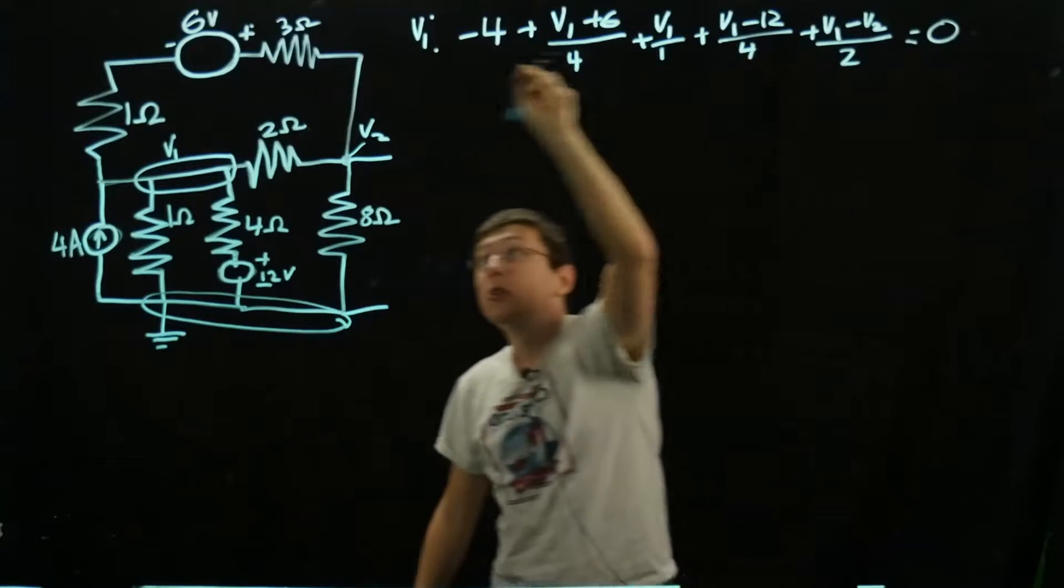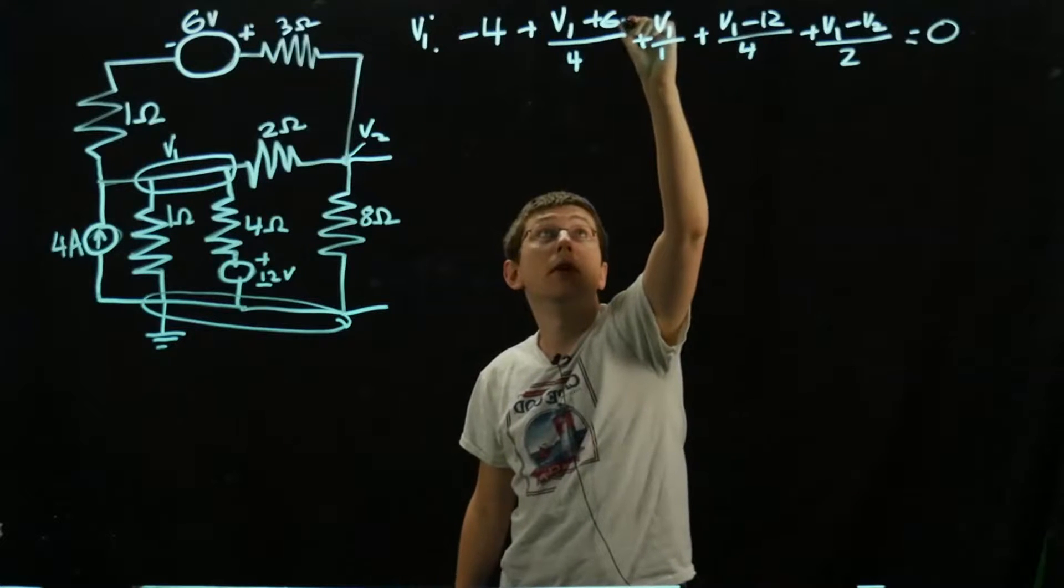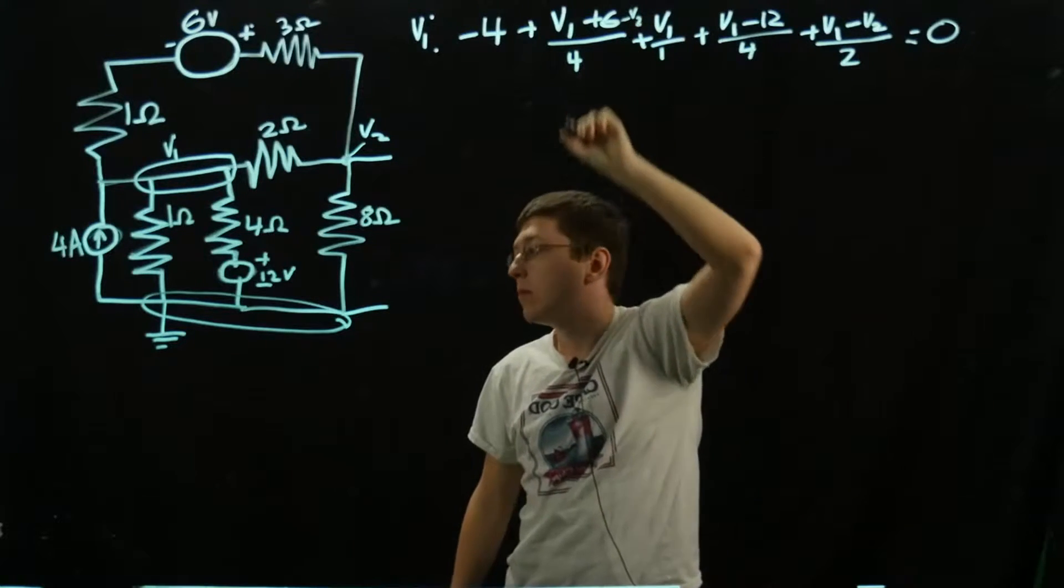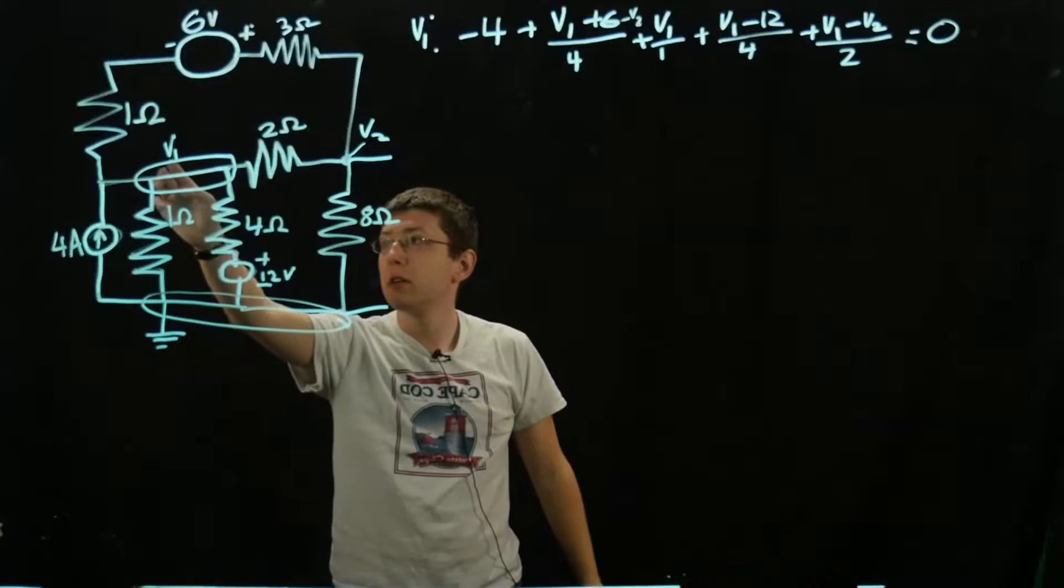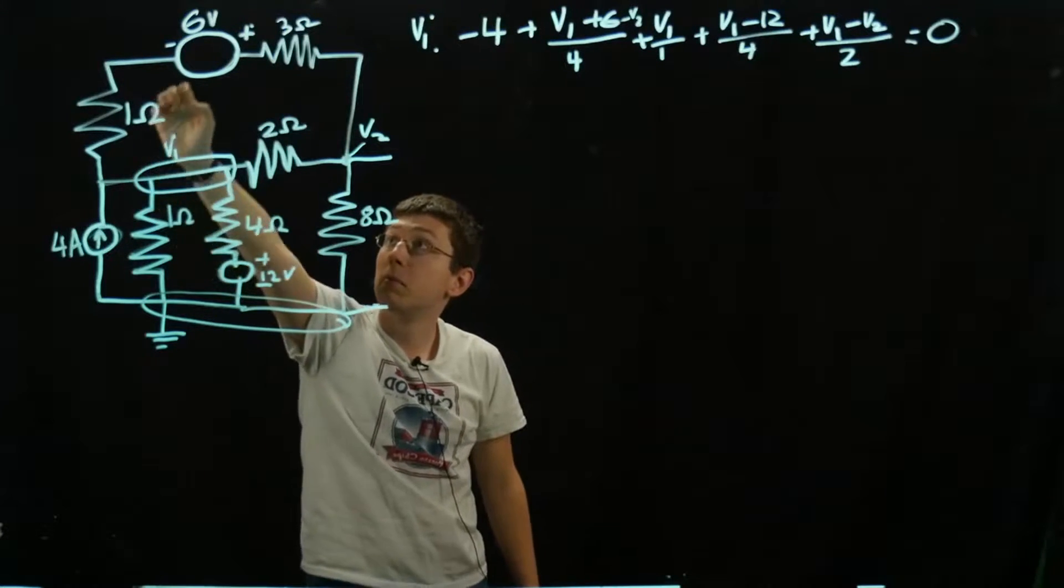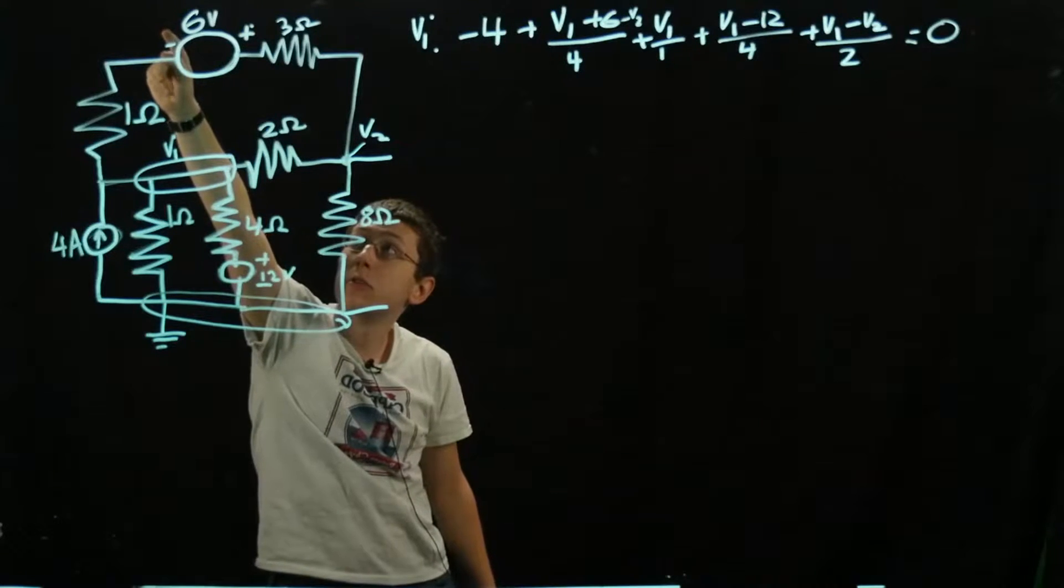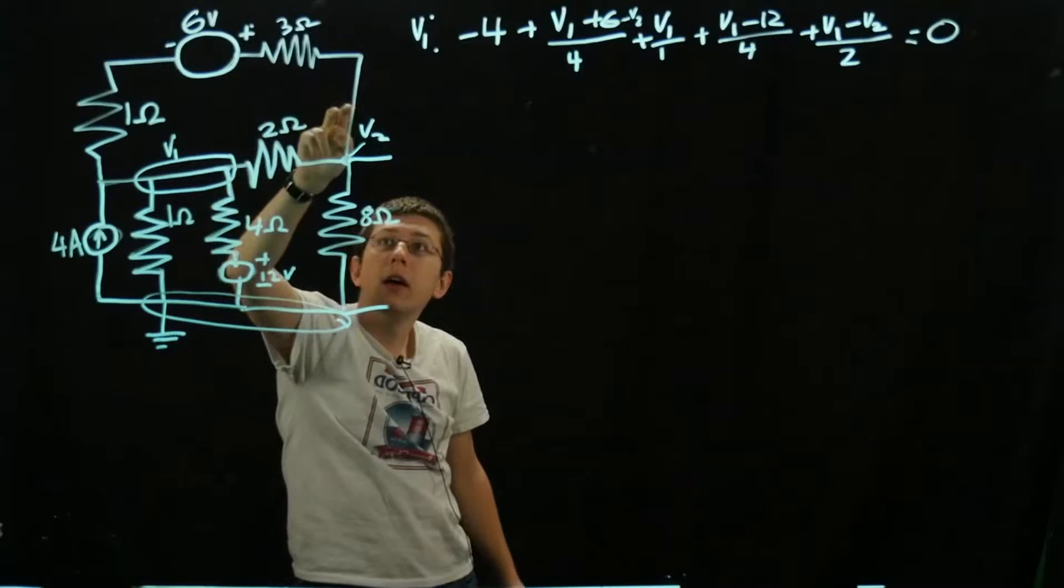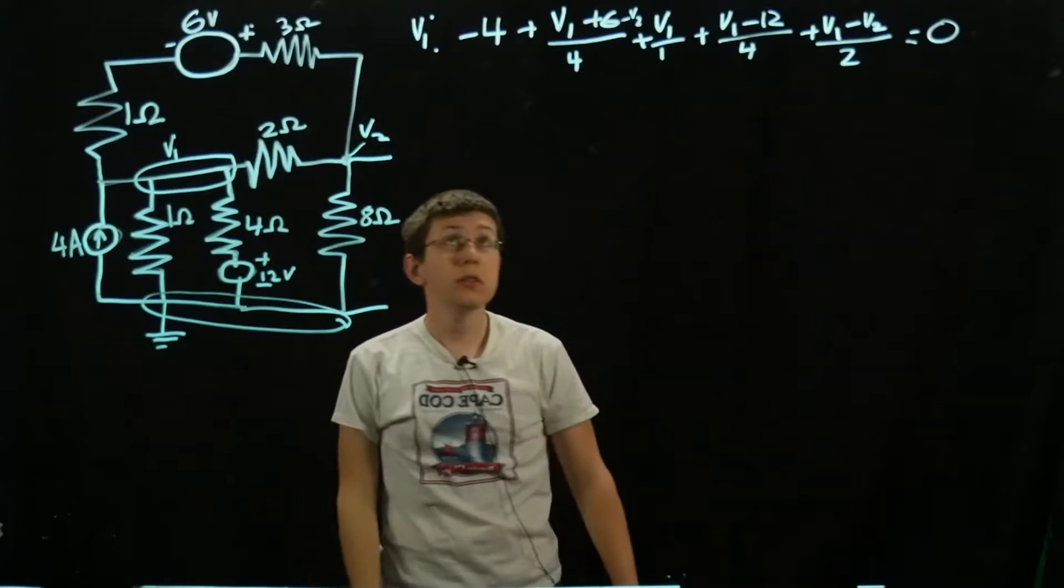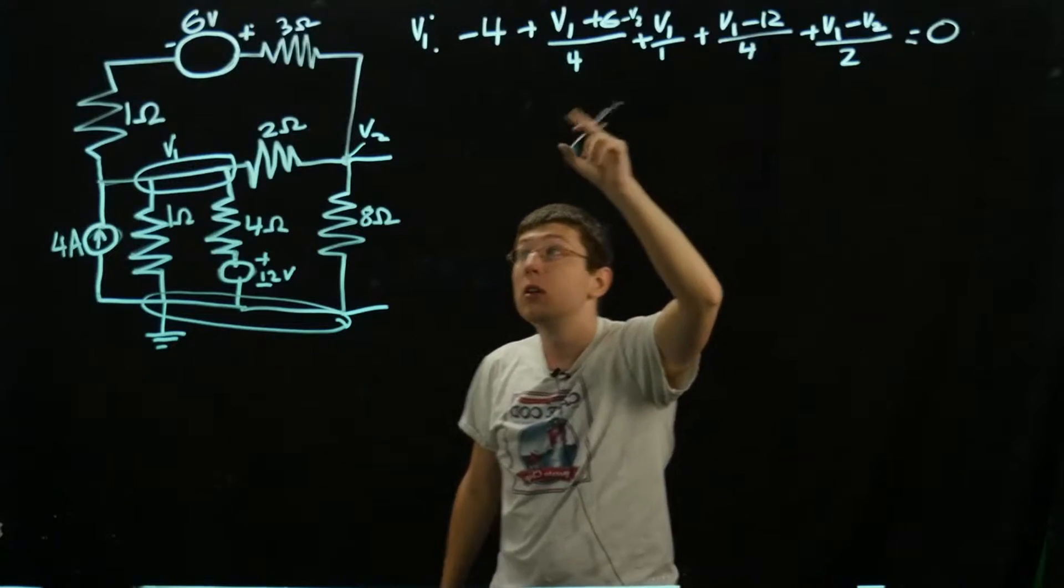I just realized it should have been V1 + 6 - V2, my apologies. As we see here, V1 and V2 are connected through this top branch, so it'll be plus 6 because we're encountering the negative terminal here first, and minus V2. That is our equation for V1.